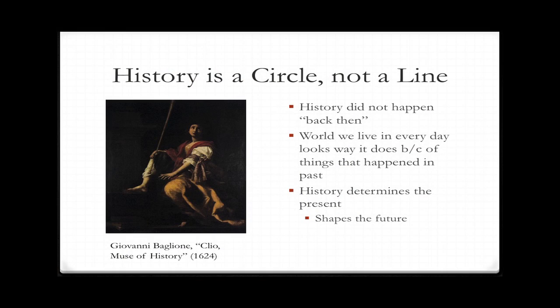It's important to note that opioids are what people think about when they think about pain, and that's reflected in the exhibit case. My approach to thinking about history is that it's not linear — the world we live in looks the way it does because of things that happened in the past. A fancy term for that is path dependency.